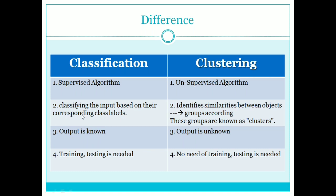In classification, the classified groups are known as classes. We already know the output, so it is easy to predict. In clustering, we don't know the output — we don't know what groups will be formed or what the different features of those groups will be, so the output is unknown.